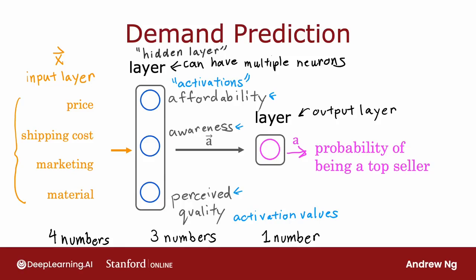To add a little bit more terminology: this layer is called the output layer, and this layer is called the input layer. The layer in the middle is called a hidden layer. That terminology comes from the fact that when you have a training set, you get to observe both x and y — your data set tells you what is x and what is y. But your data set doesn't tell you the correct values for affordability, awareness, and perceived quality. So the correct values for those are hidden; you don't see them in a training set, which is why this layer in the middle is called a hidden layer.